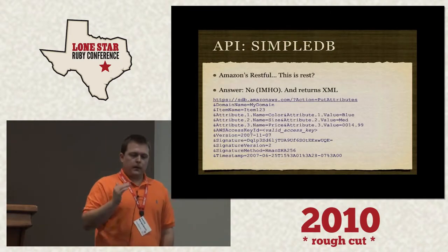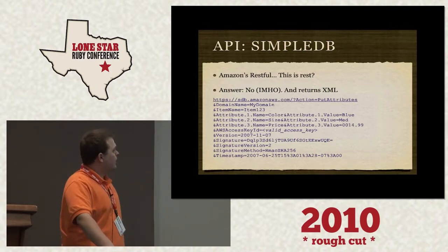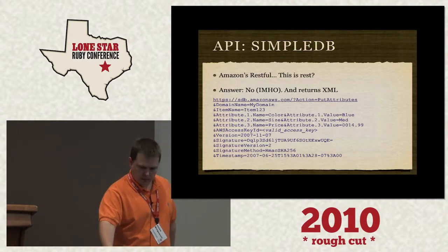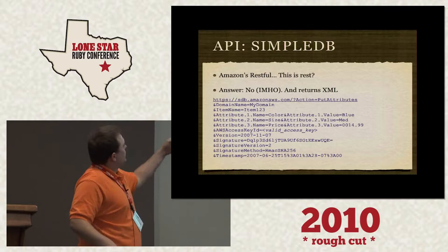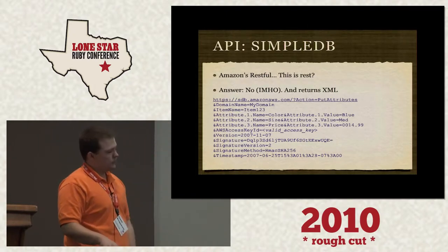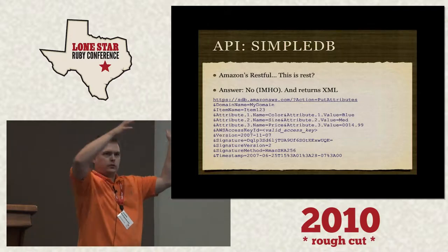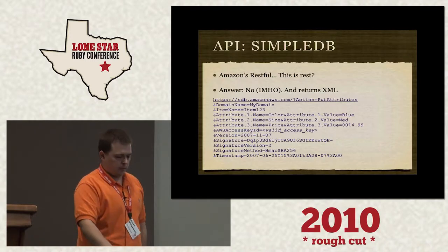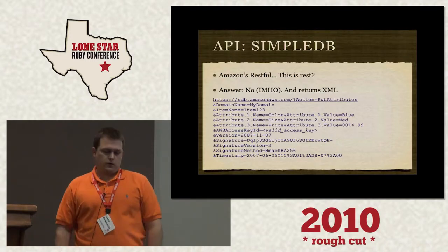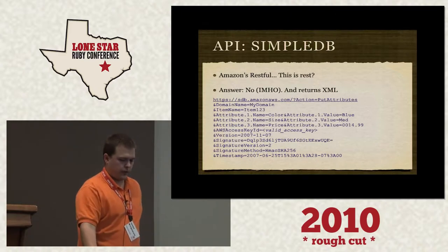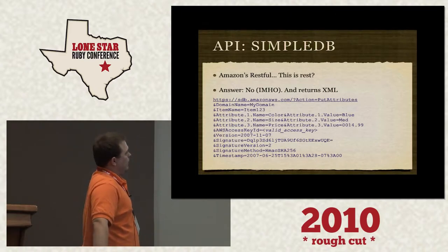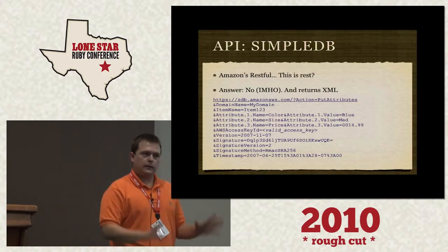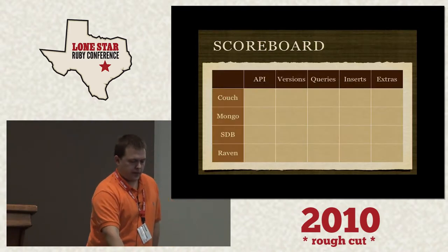This is Amazon SimpleDB, and I claim it is not RESTful. This is a put request — you can see it's action equals PutAttributes, and you set all your attributes as name-value pairs which are each stored and queried later on. I'm not going to spend too much time on SimpleDB throughout the whole talk, so you can guess how it rates on our scoreboard in the end. But it does get the job done, and you can build things that easily store with Amazon and retrieve them later.